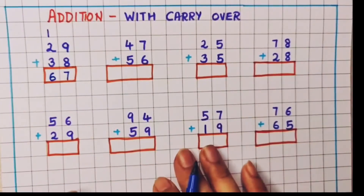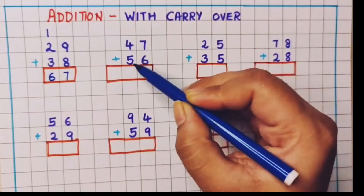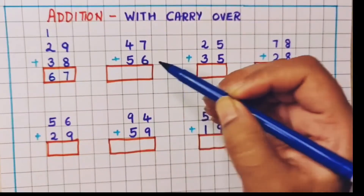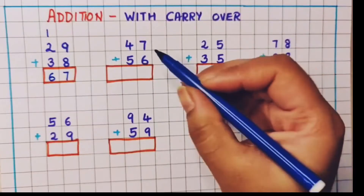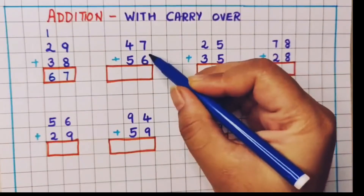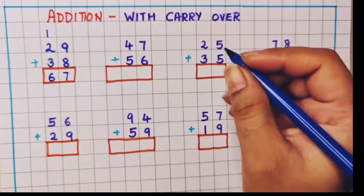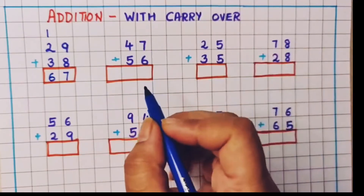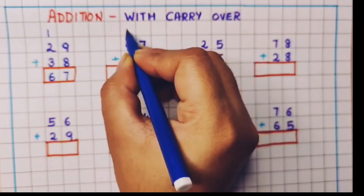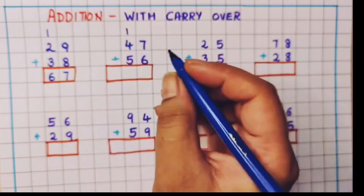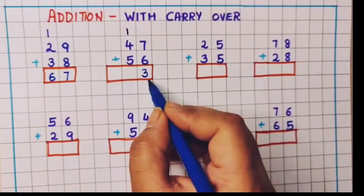Now let's understand one more example: 47 plus 56. First we have to do the addition of 7 and 6. 7 plus 6 gives the answer 13. Now 13 is a two-digit number, so the 1 I will write in the tens place and the 3 I will write in the ones place.